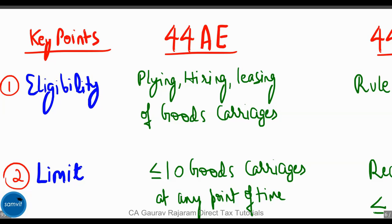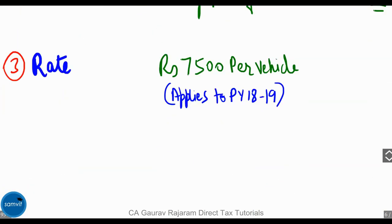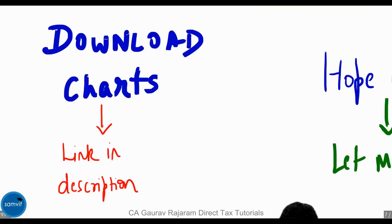The last deemed income section is Section 44AE. Who's eligible? Any assessee engaged in plying, hiring, or leasing of goods carriages. The limit is less than or equal to 10 goods carriages at any point in time during the year. The rate of income is ₹7,500 per vehicle. Note that there has been a change after previous year 2018-19, so this rate applies only up to PY 2018-19.